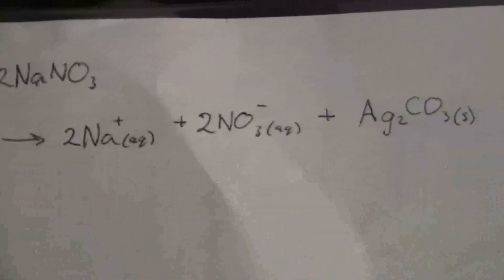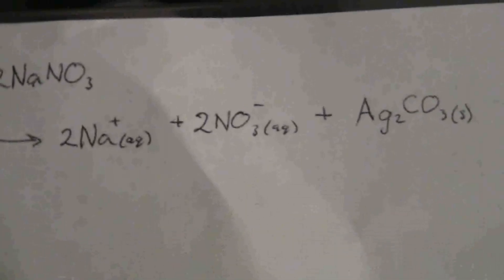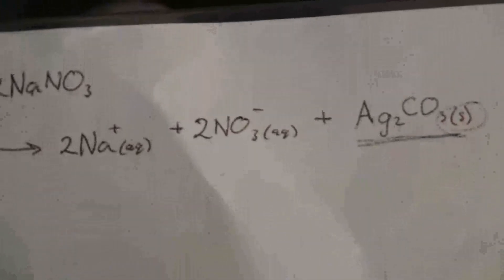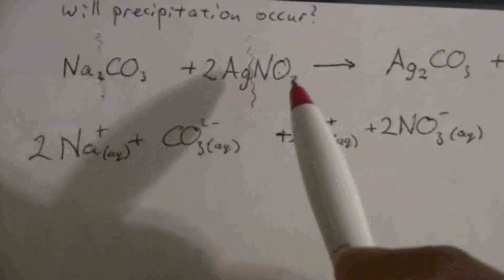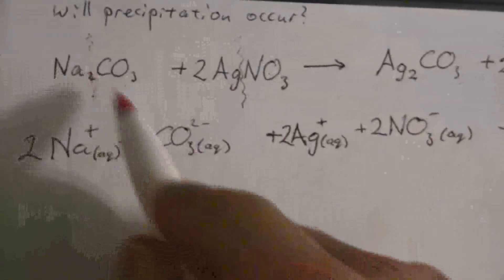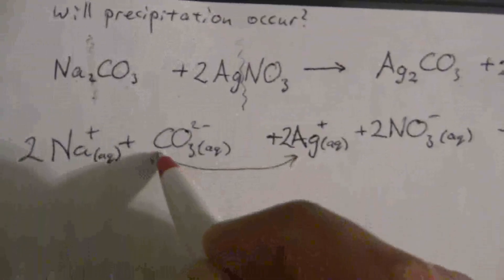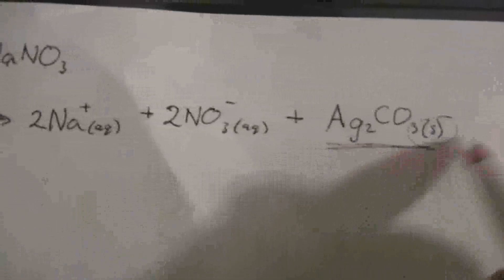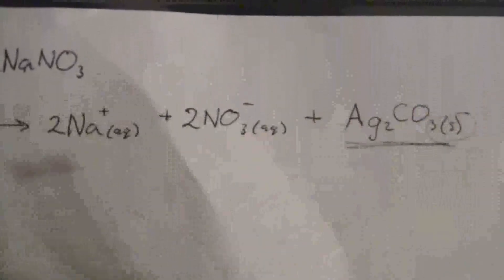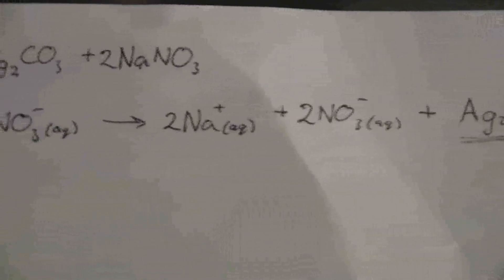We've written everything out just the way that it appears in the real solution when we make these solutions and mix them together. And so the simple answer to the question is, will precipitation occur? Yes. The reason is because this product is a soluble compound. That is our precipitate. So when we mix these two solutions, these ions come together, and then the carbonate, which was originally with the sodium, now it joins up with the silver, and it forms that precipitate. So what you would find is this solution would become cloudy, and this would float or sink down to the bottom.